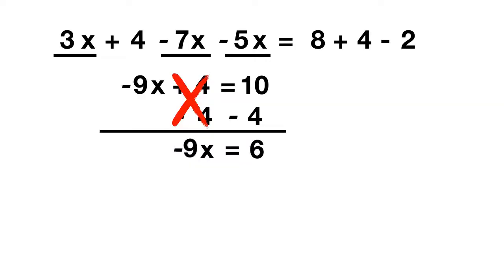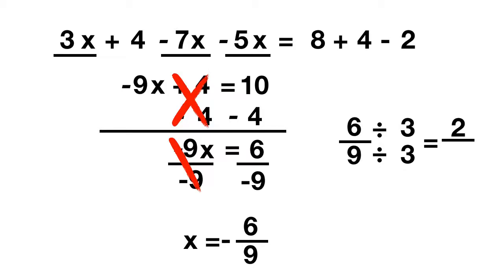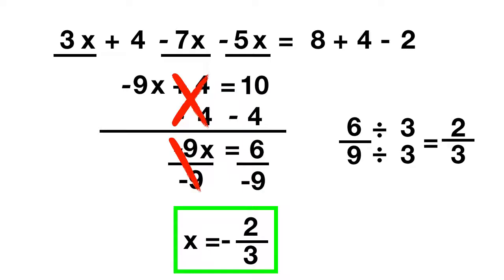To get rid of the negative 9, we divide by negative 9. That cancels out and leaves just x. On the other side, 6 divided by negative 9 can be written as negative 6 ninths. But let's simplify that fraction — both 6 and 9 can be divided by 3. 6 divided by 3 is 2, and 9 divided by 3 is 3. So x is equal to negative 2 thirds.